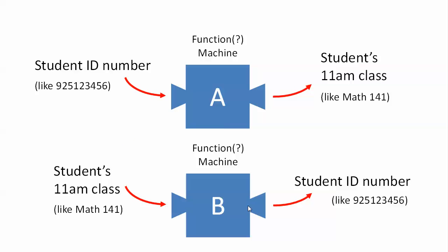Here are a couple of different possible function machines. These are a little odd because we're going to be talking about inputs and outputs that are not necessarily numerical. Imagine that we had student ID numbers and that student's 11 a.m. class. So here are two possibilities: machine A, where you feed in a student ID number and it tells you that student's 11 a.m. class; or machine B, where you put in an 11 a.m. class and it tells you the student's ID number. So which of these — or maybe both — are functions?